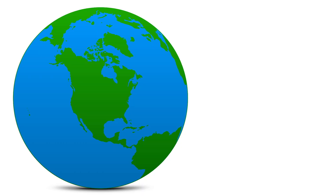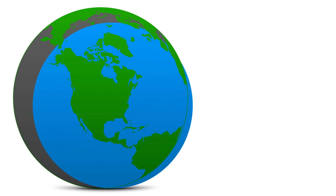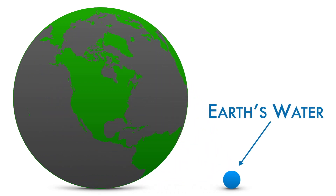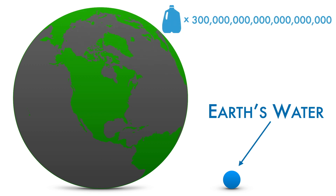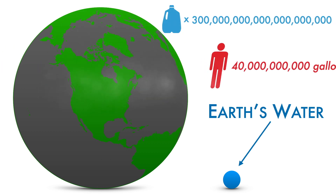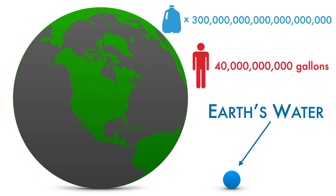If all of Earth's water from the air, the ground, and underground were gathered into a single sphere, the volume of that sphere would be 1,000 times less than that of the Earth. All told, there are approximately 332,500,000 cubic miles of water on the Earth — that's over 300 million trillion gallons. If distributed amongst all the human inhabitants of the Earth, every individual would receive over 40 billion gallons of water each. Even though that seems like a lot, most of Earth's water is in fact unavailable for human consumption.